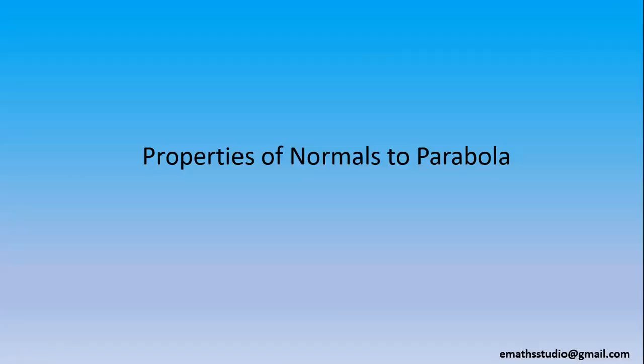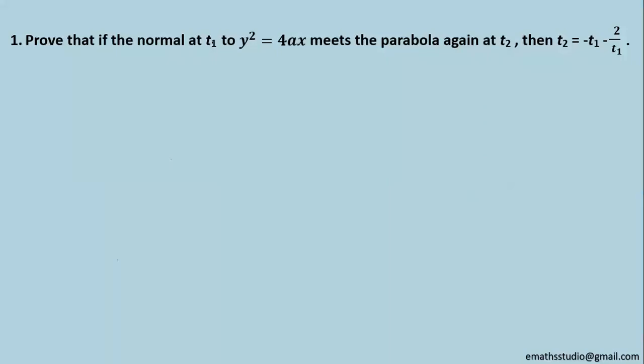In this session, we are discussing two important properties of normals to parabola. Here is the first one. Prove that if the normal at t₁ to y² = 4ax meets the parabola again at t₂, then t₂ = -t₁ - 2/t₁.